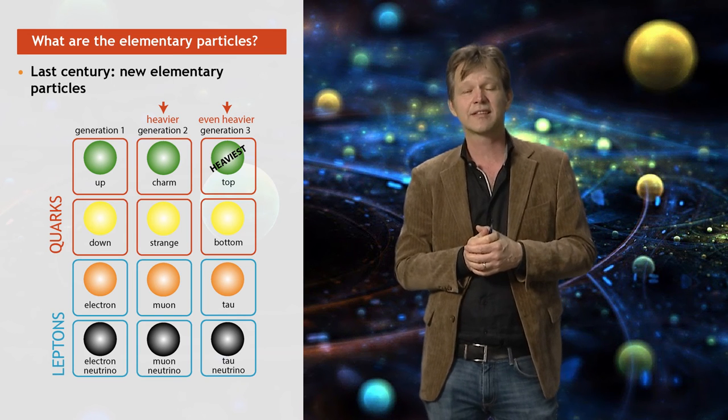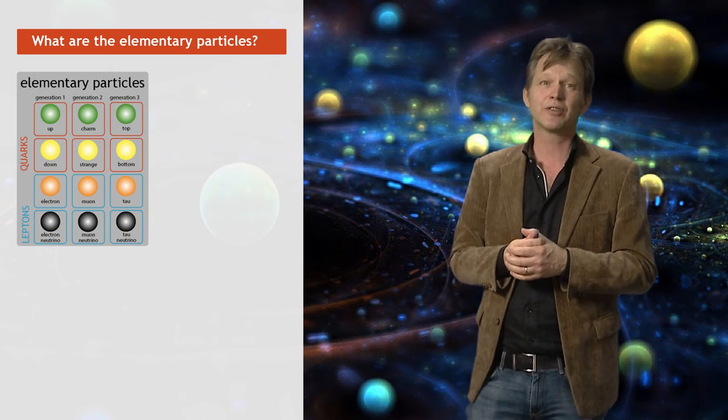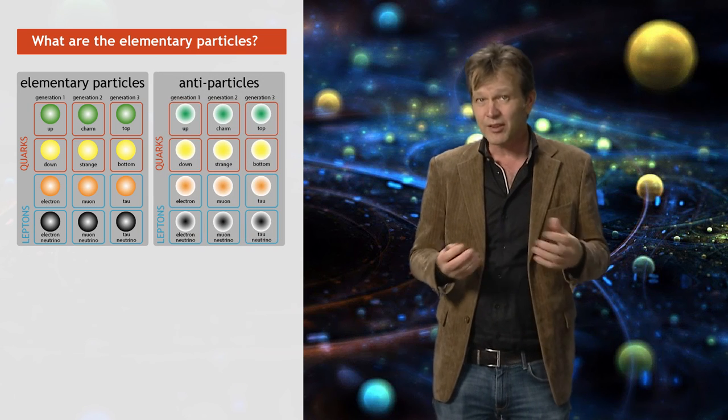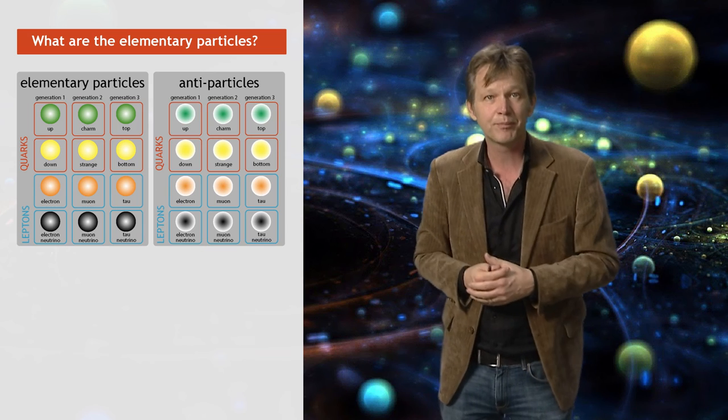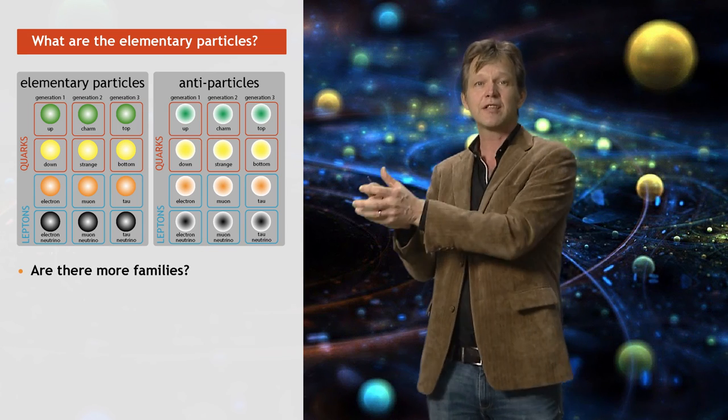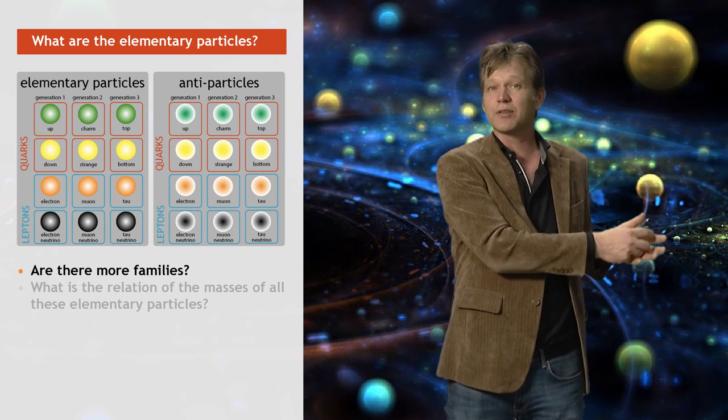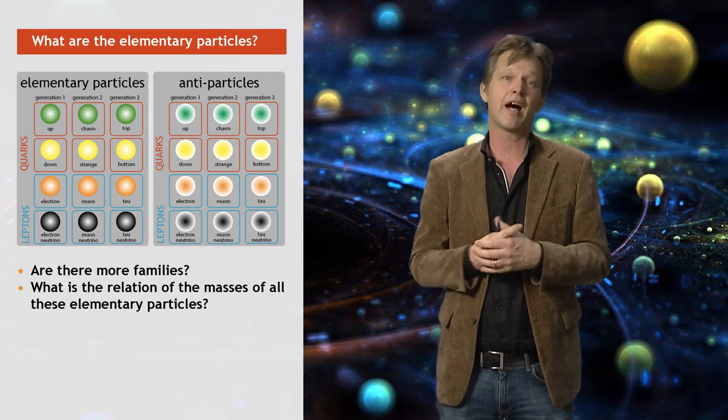And this is the status of elementary particles today. For all these particles, also the antiparticles have been observed. But we don't know exactly what is the rationale behind the fact that we have three families. Are there any more families? Is there a fourth family? What is the relation of the masses of all these elementary particles? Why do we see this structure? On all of these questions, we don't have answers.